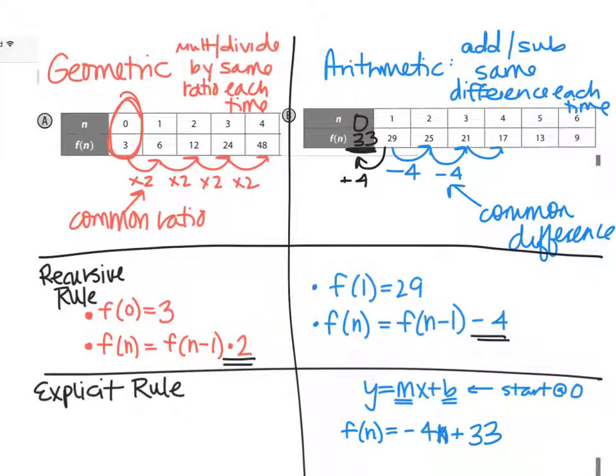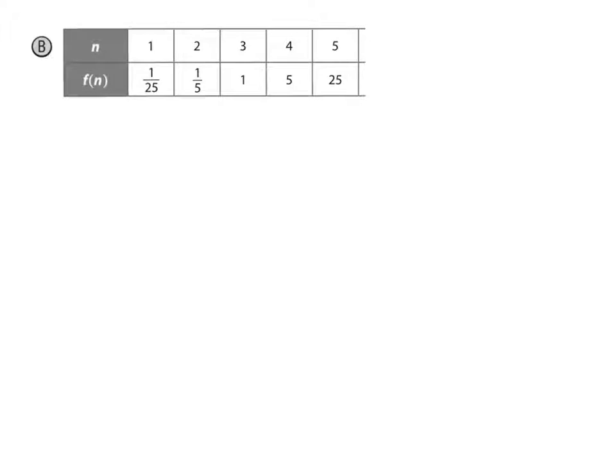We'll talk about how to use that here in a minute. The explicit rule for geometric is very similar. It's going to look a little different, though. So f(n) equals, this time we're multiplying. So we're going to say where we're starting, which is at 3. And then we want to multiply by 2 over and over again. But when we multiply over and over and over again, remember, that's exponents. So that means I want to use an exponent to say that, because exponents are repeated multiplication.